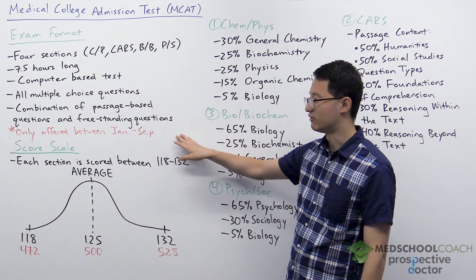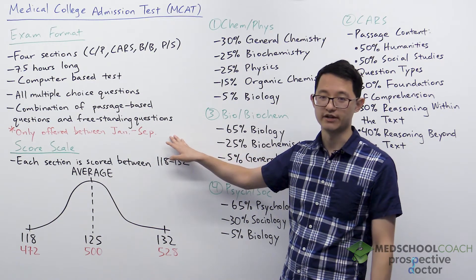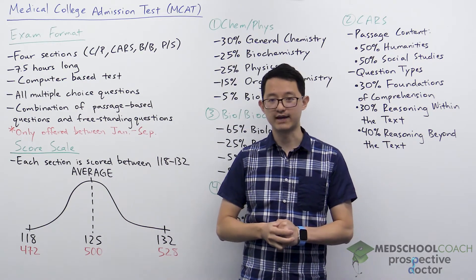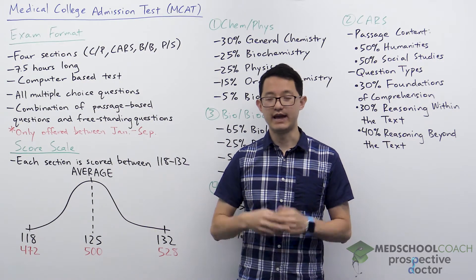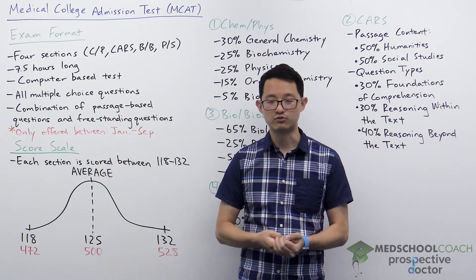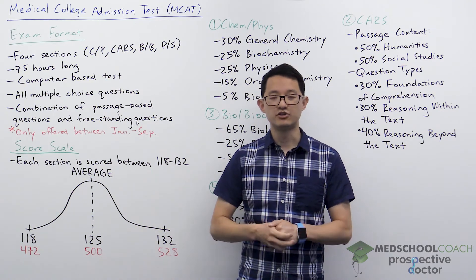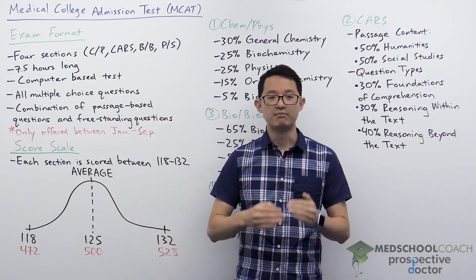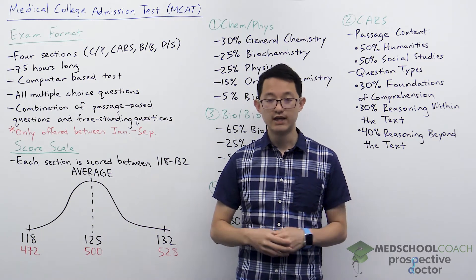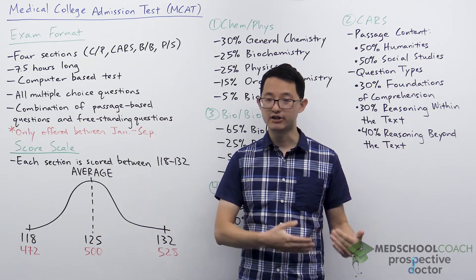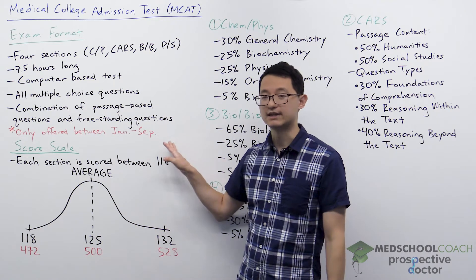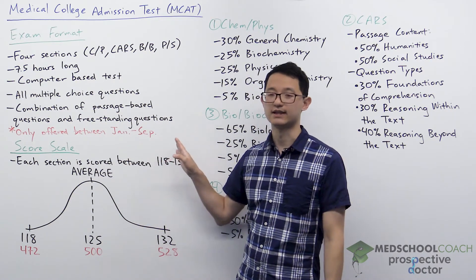The MCAT is only offered between the months of January through September each year. This is important to keep in mind as you think about when you want to take the MCAT. Since most students apply for medical school during the summer, it's recommended that you take the MCAT by April or May of the spring before the summer you're going to apply. If you want to take it earlier, like January of that spring or even the year before, that's completely fine — just keep in mind these are the only months the MCAT is offered.